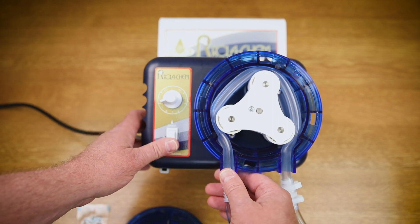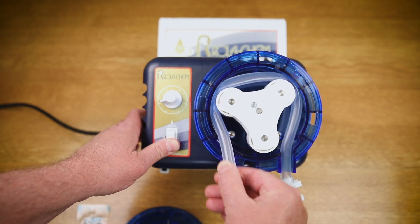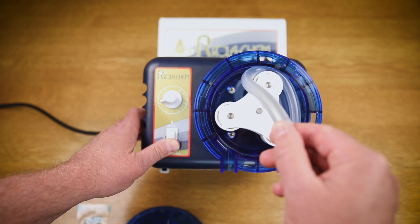Remove the pinch tube. Simply turn the unit on and feed the hose assembly through the roller assembly.